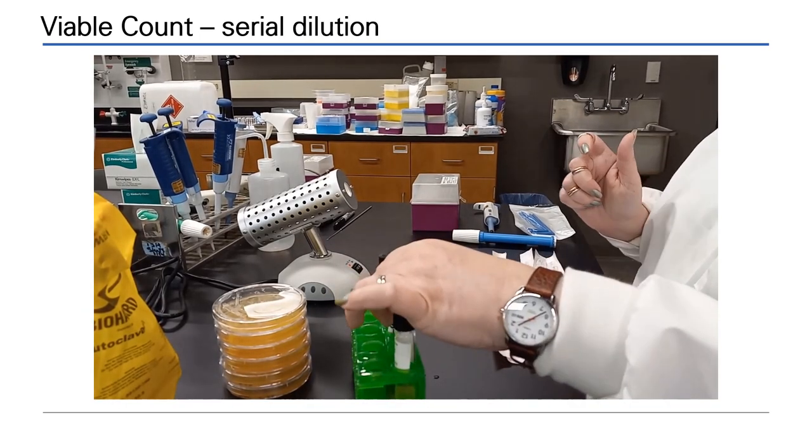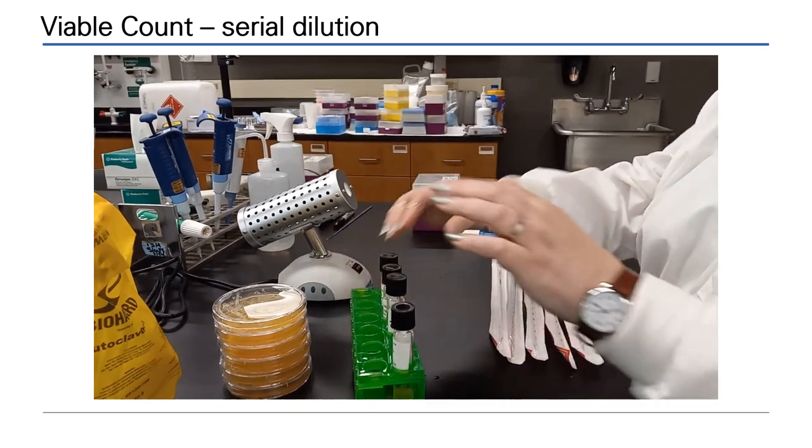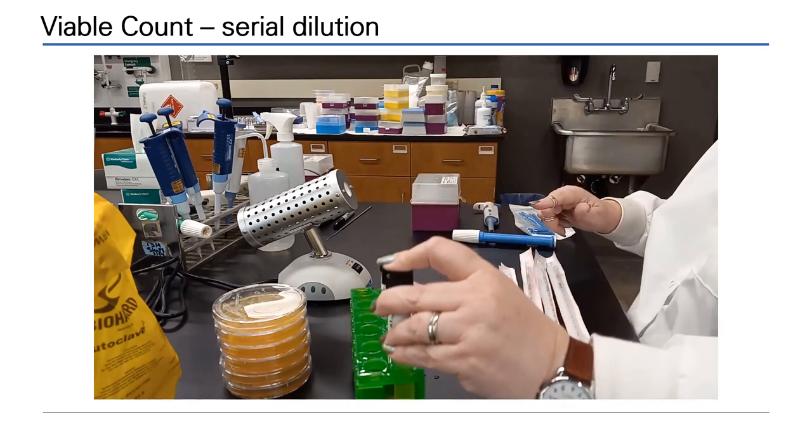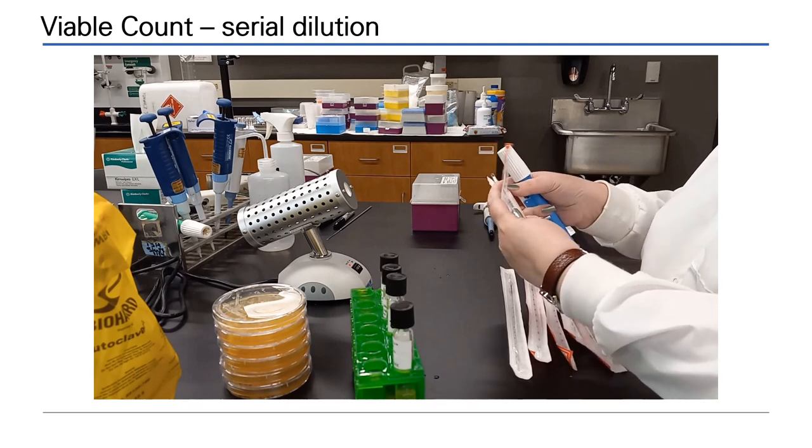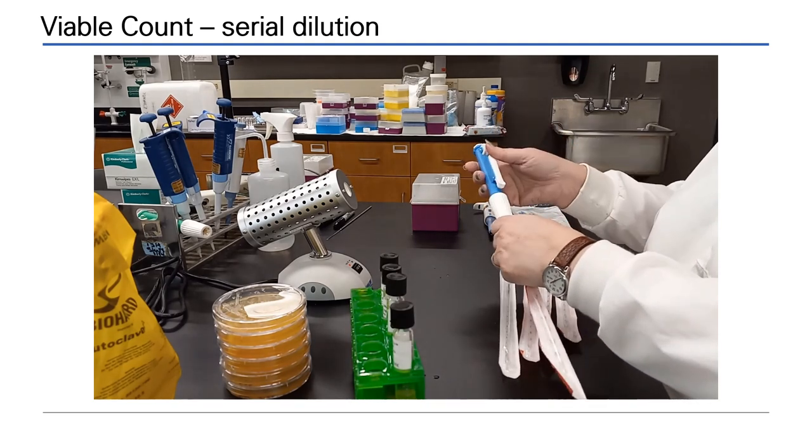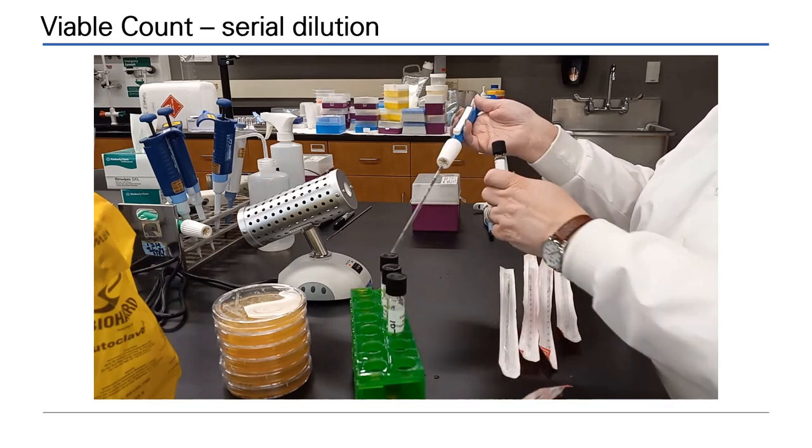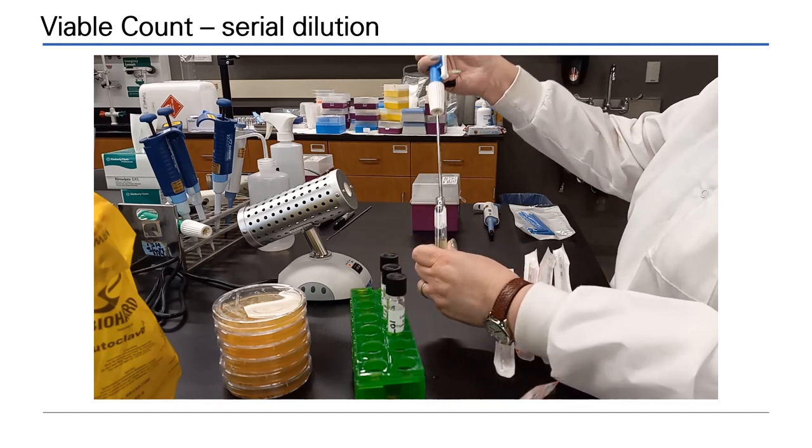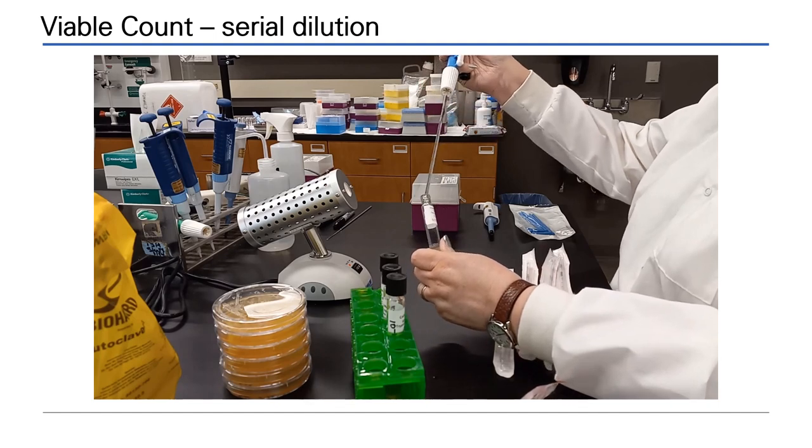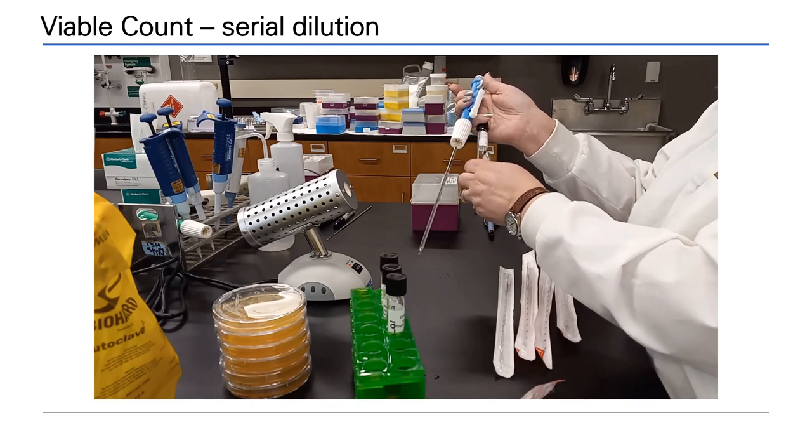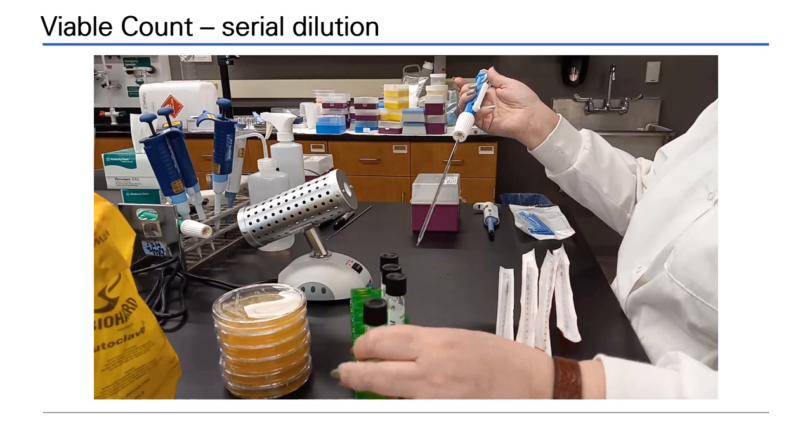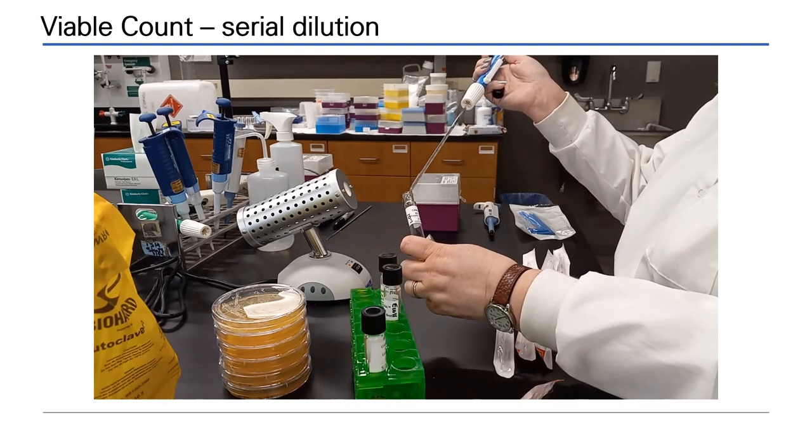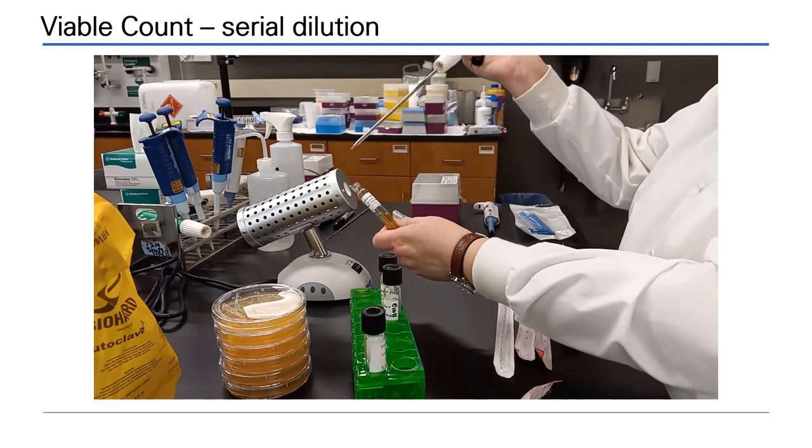The viable count begins by the aseptic dilution of your original sample. Loosen your caps and re-suspend your original culture. Using serological pipettes, you will perform a 10-fold dilution series. In each of the tubes for the dilution series, we have 9 ml of sterile broth. To perform a 10-fold serial dilution, you will simply remove 1 ml from the original and transfer it into the next tube in the series. The cells are transferred into the tube, but we do not use this pipette to mix and re-suspend those cells.